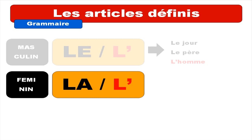So the feminine form — it's la, as we saw previously. And then same concept: in some cases when the words are starting with a voyelle, or then h plus une voyelle, as we say in French, you will have to put l'apostrophe. So let's have a look.